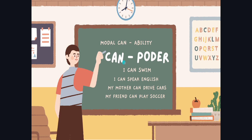Sabemos que significa en nuestro idioma 'poder' — puedo, puedes, podemos, ellos pueden. Entonces, para denotar algún tipo de habilidad que tengamos, utilizamos el modal CAN. Denota habilidad. Cuando hablamos de habilidad, el CAN puede entenderse en nuestro idioma como 'poder'. Tenemos aquí cuatro oraciones. Por ejemplo: 'I can swim' — puedo nadar. 'I can speak English' — puedo hablar inglés. 'My mother can drive cars' — mi mamá puede conducir autos. And 'My friend can play soccer'. Aquí estamos denotando habilidad utilizando el modal CAN.